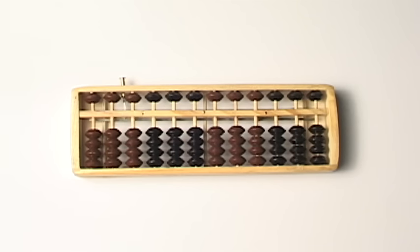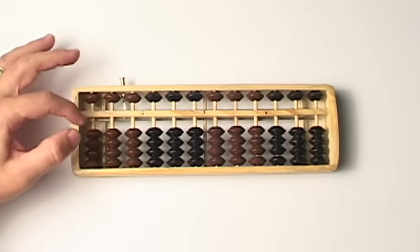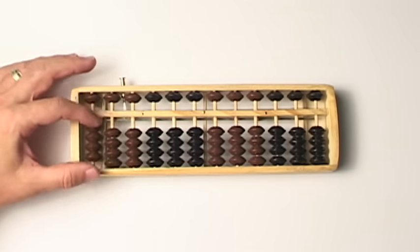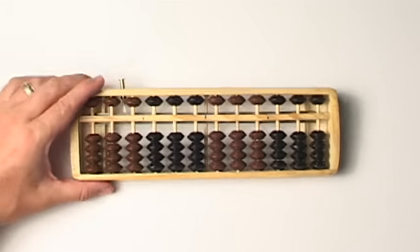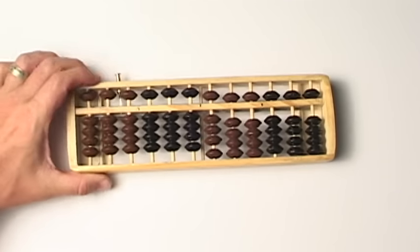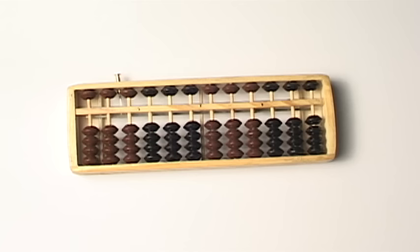This started to look similar to what we see today. Eventually they came up with a bead abacus like you see today, where these beads are on rods. You don't lose the beads as easily—they're attached and they can't fall off.